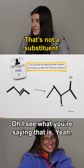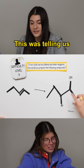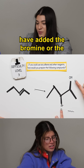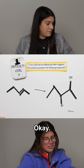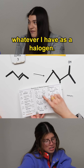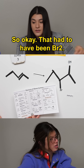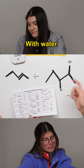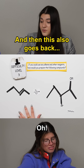This goes back to the reaction itself — this was telling us that the double bond was here, but we hadn't added the bromine or the OH yet. That happens with our reagent. It's just this one where it's dependent on whatever halogen I have, so bromine — that had to have been Br2 with water. Water gives us the alcohol.